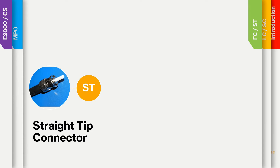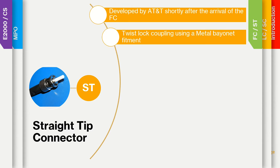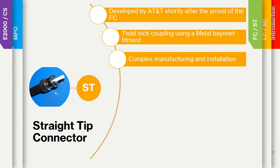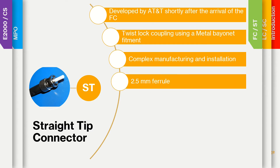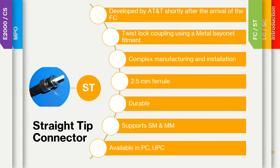The straight-tip connector, or ST, was developed by AT&T shortly after NEC introduced the FC connector in Japan. The ST has a twist-lock coupling mechanism secured by a metal bayonet fitment. It is more complex to manufacture and install than the SC and LC connectors. It has a 2.5 mm ferrule. ST connectors are available in single mode and multi-mode. The single mode connector is not available as an APC polish because it lacks an alignment factor.